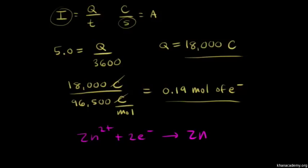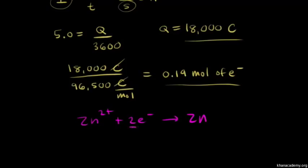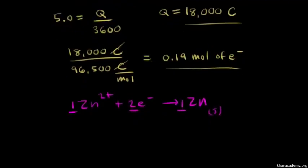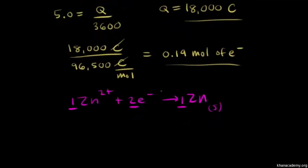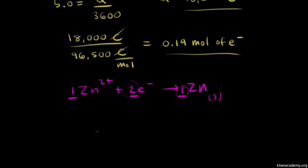Let's think about those mole ratios here. Two moles of electrons are needed to reduce one mole of zinc two plus ions to form one mole of solid zinc. So we now have the relationship. We know the mole ratio of electrons to moles of solid zinc. It's a mole ratio of two to one. So one mole of zinc is produced for every two moles of electrons that we have.